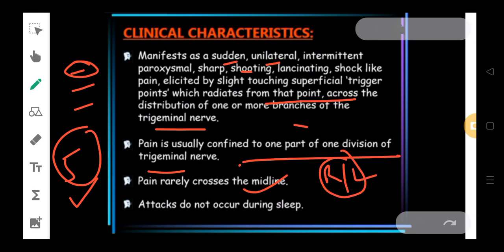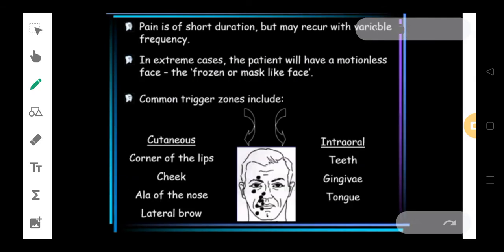Pain rarely crosses the midline and so we say that it is unilateral. If this is the right side and this is the left side of face, the right side is more prominently affected. Attacks do not occur during sleeping time. Pain is short duration but can occur with variable frequency. In extreme cases, the patient will have motionless face or frozen or mask-like face because all the sensations will be lost at this particular moment. What are the common trigger zones? The common trigger zones could be the corner of the lip, cheek, ala of the nose or the lateral brow. In the intraoral structures, we see the common sites to be teeth, gingiva and the tongue.